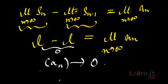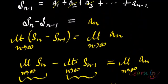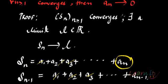So this becomes the convergence criterion of series which says that An will tend to 0 when Sn is convergent.